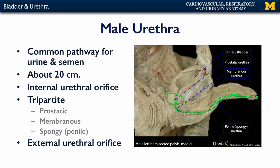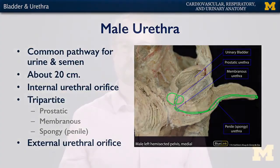Whereas in females the urethra is approximately 4 centimeters, in males it is approximately 20 centimeters on average, varying with penis length. We've talked about the urinary bladder and the peculiarities of its anatomy, and we've also discussed the urethra and how it conducts urine from the urinary bladder to the outside world in both women and men.